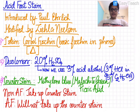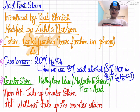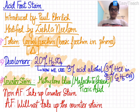Acid fastness was introduced by Paul Ehrlich and modified by Ziehl-Neelsen. We give a primary stain to the bacilli, which is carbolfuchsin — a mixture of basic fuchsin and phenol — and we have to heat it. Then we add a decolorizer; earlier we used 20% sulfuric acid, but now we most commonly use 3% acid alcohol, that is 3% hydrochloric acid in 95% ethanol. Following the decolorizer, we apply the counter stain, most commonly methylene blue.